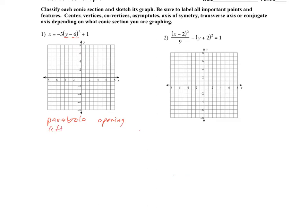With the parabola, we need to identify the vertex, the focus, the directrix, and the axis of symmetry — those are the four things that you need. This equation is in vertex form, so the vertex would be at h, which is 1, and k, which is 6. So at the point (1, 6), here's our vertex.